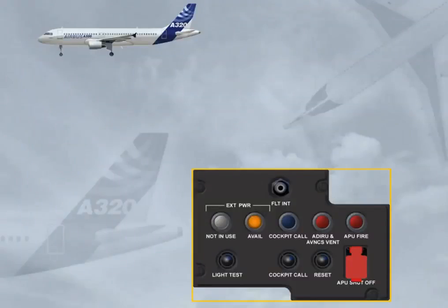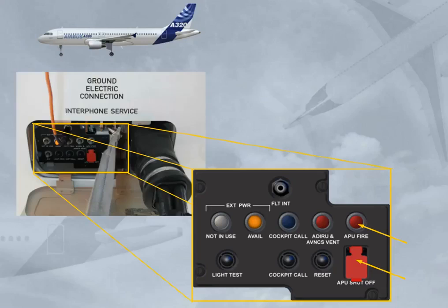There is also an APU shut off push button and an associated APU fire warning light located on the external power panel; refer to the ATA-26 fire protection chapter. This panel is located in front of the nose gear bay.